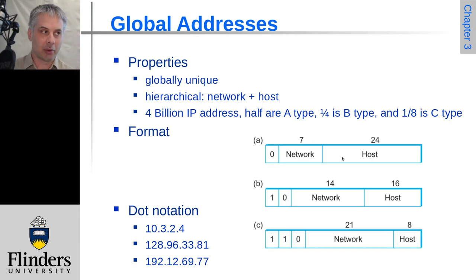So that means there can only be 128 of these class A networks, and they were typically allocated. A few universities had them very early on, but mostly large companies would have been allocated them quite early on.